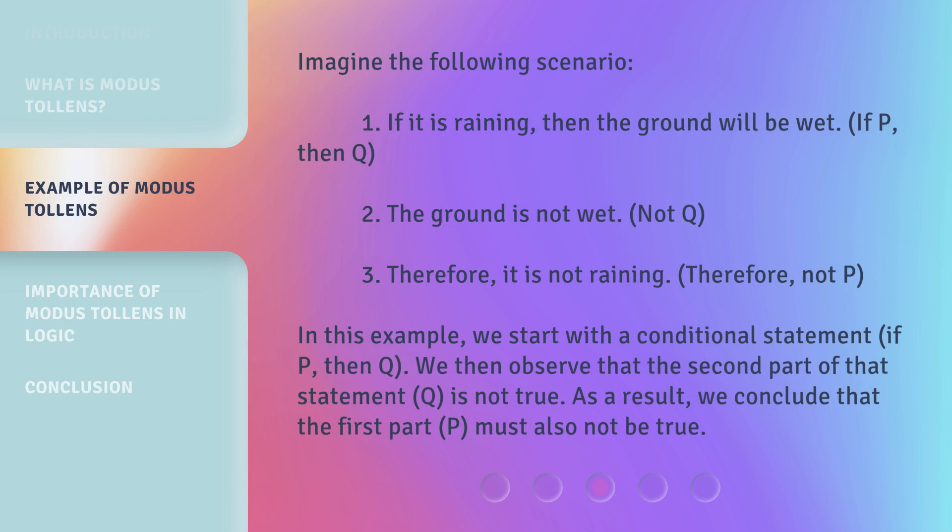Imagine the following scenario. 1. If it is raining, then the ground will be wet — if P, then Q. 2. The ground is not wet — not Q. 3. Therefore, it is not raining — therefore, not P.